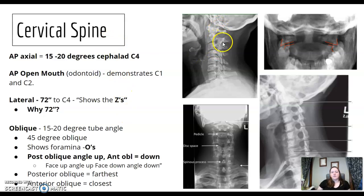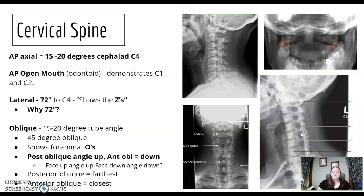What do you see on the lateral C-spine? You're not going to see circles there — you see the circles on the oblique. The obliquity should be 45 degrees, where you see nice open intervertebral foramina, or the O's. Make sure you know what you can see on a posterior cervical spine oblique — which side are you seeing? The side closest to the image receptor or the side away?